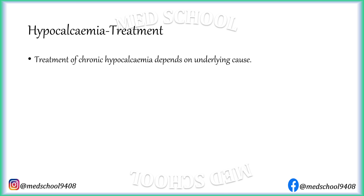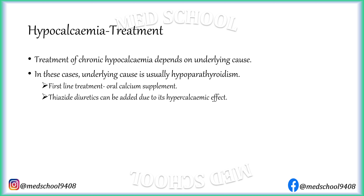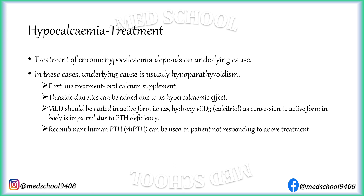Treatment of chronic hypocalcemia depends on the underlying cause. In these cases, the underlying cause is usually hypoparathyroidism. First line treatment is oral calcium supplement. Thiazide diuretics can be added due to their hypercalcemic effect. Vitamin D should be added in active form, i.e., 1,25-hydroxyvitamin D3, also known as calcitriol, as conversion to the active form in the body is impaired due to PTH deficiency. Recombinant human PTH can be used in patients not responding to the above treatment.